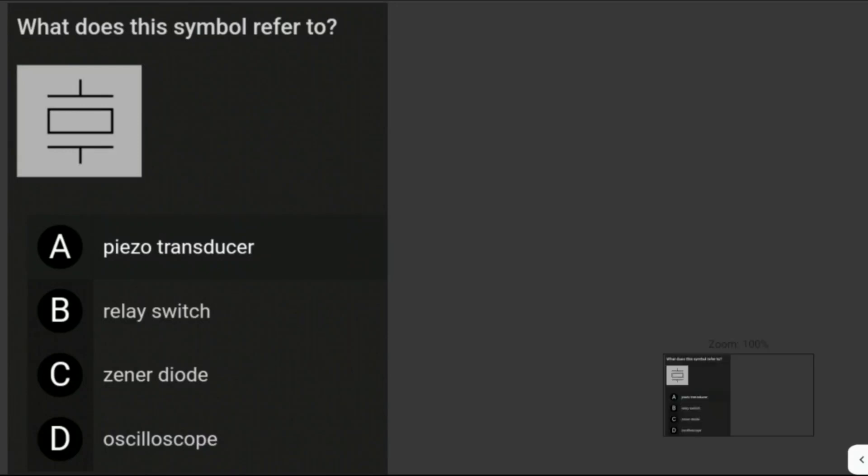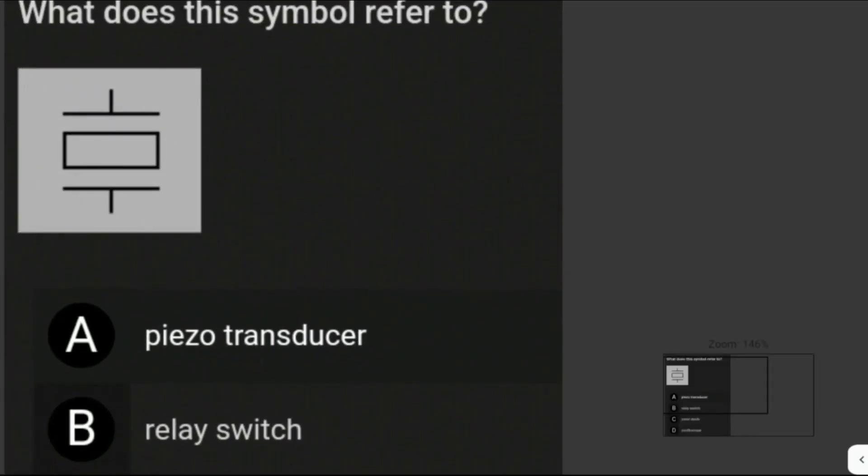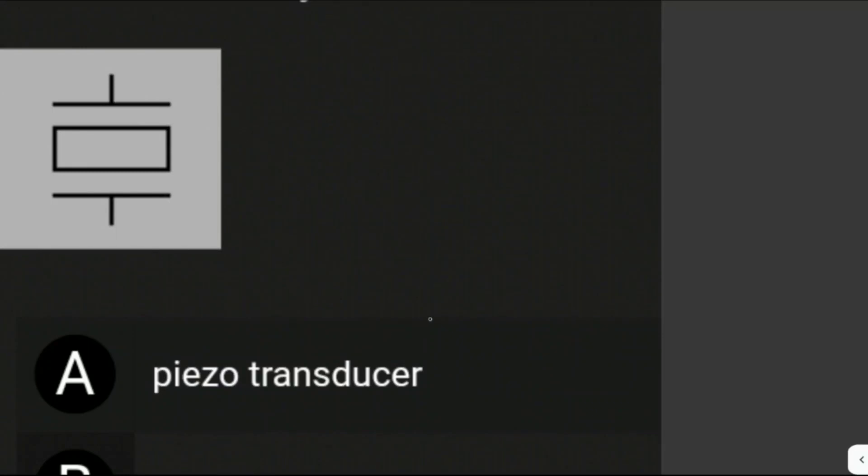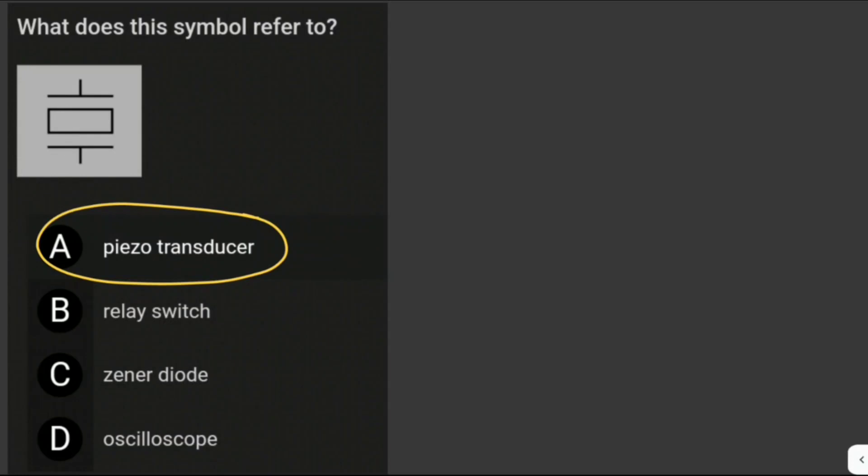What does this symbol refer to? We're given this symbol here. From the choices, we have piezo transducer, relay switch, Zener diode, and oscilloscope. This symbol is a transducer, a piezo transducer. A transducer is any device used to convert energy from one form to another. Piezo transducers are often used in microphones, where they convert sound pressure to electrical voltage. They generate ultrasonic activity. They measure the pressure of sound waves above the frequencies that can be heard by the human ear. The answer is letter A, the piezo transducer.